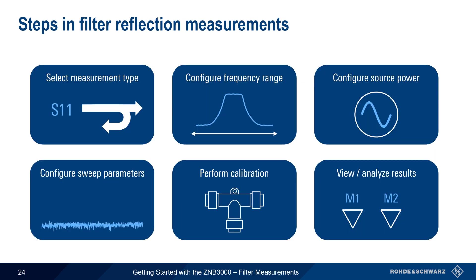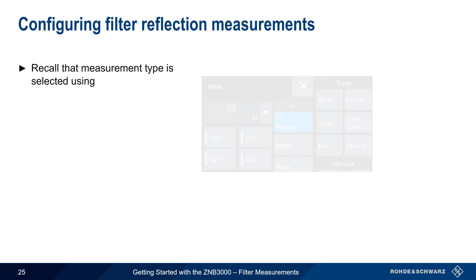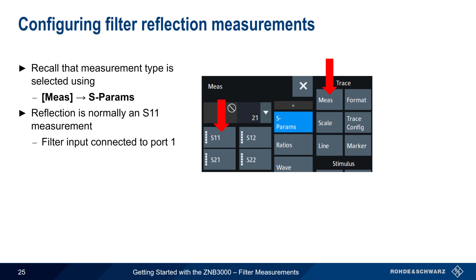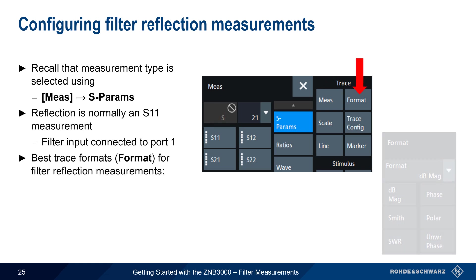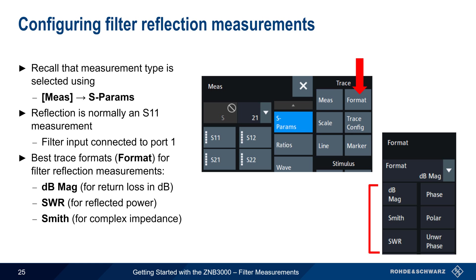Before we end this presentation, let's spend a few minutes going over filter reflection measurements. The steps in making reflection measurements are essentially the same as for transmission measurements, with the greatest differences being selecting the measurement type and how results are viewed or analyzed. Recall that on the ZMB3000, measurement type is selected using Measure > S-Parameters. Reflection measurements are normally S11 measurements, with the filter input connected to port 1 on the ZMB. Several types of trace formats are appropriate: dB Mag is used when evaluating results in terms of return loss, SWR is used when evaluating reflected power on a linear scale, and a Smith chart display can be used to visualize the complex impedance of the filter input as a function of frequency.